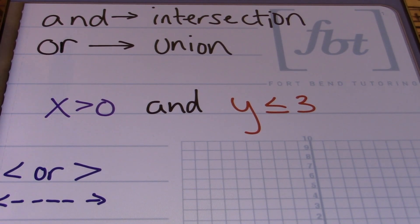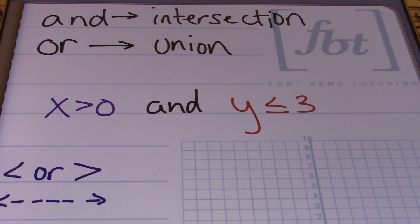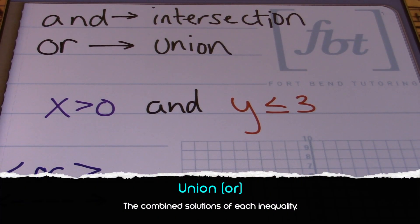What you should know is this: when you see the word 'and' in between two linear inequalities, they're asking you for the intersection. They want to know what are the solutions that these two inequalities have in common — the overlapping solution. When you have an 'or' between two linear inequalities, they're asking you for the union. They want to know the combined solution, a combination of all of the solutions.